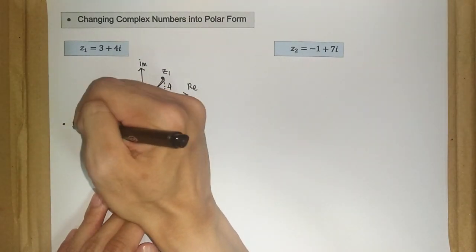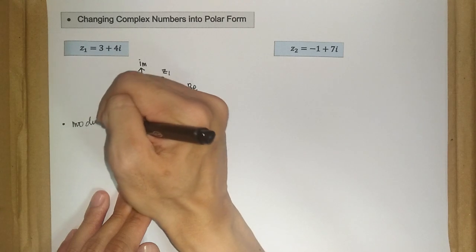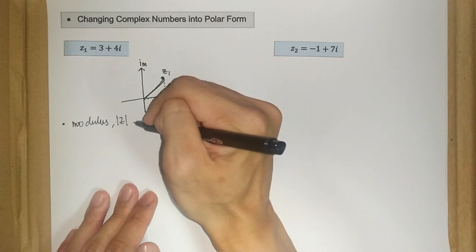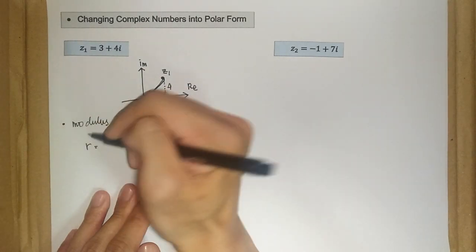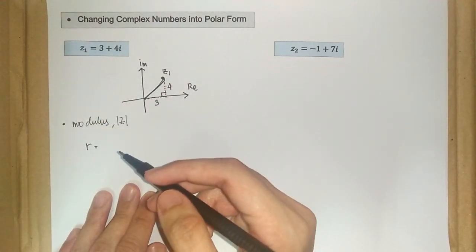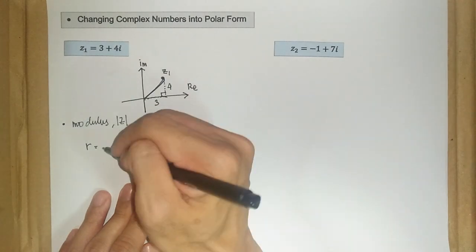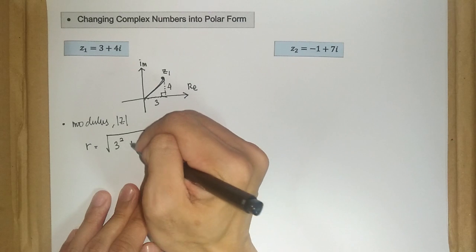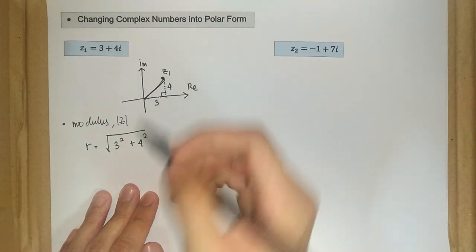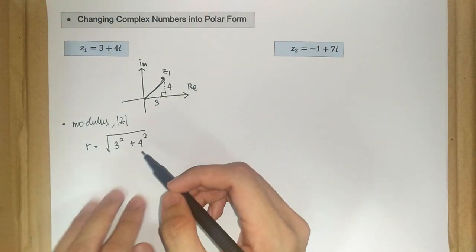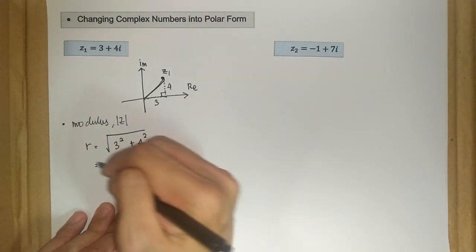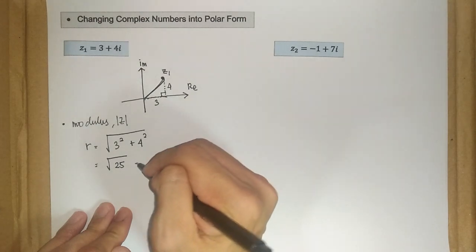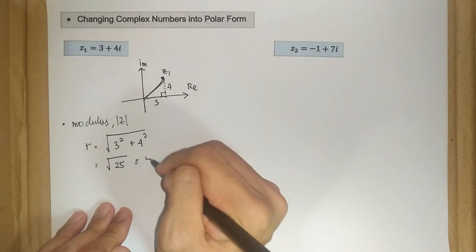So first, modulus of z. So r, we just apply the Pythagoras theorem here. So r is equal to the square root of 3 squared plus 4 squared. So we have 3 squared is 9, 9 plus 16 is 25. So we have r is equal to square root of 25, which is equivalent to 5.